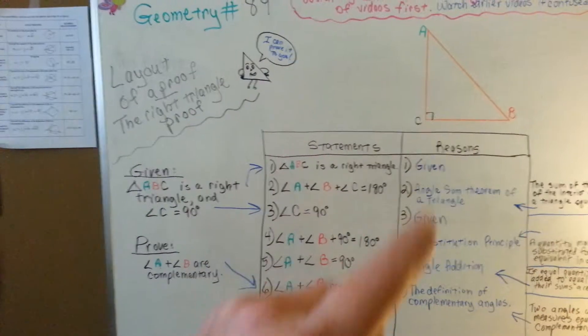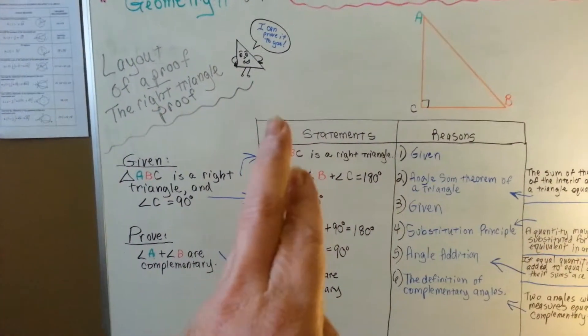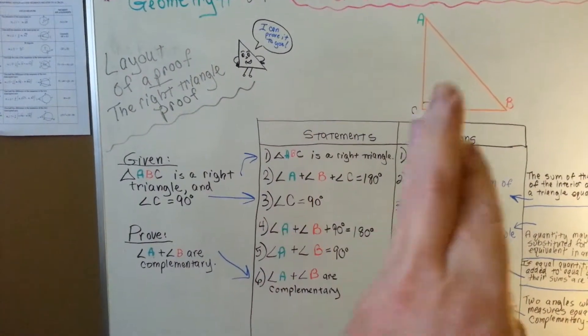We have our drawing, as we should, above our proof table. On our proof table we have our statements on the left and our reasons on the right.